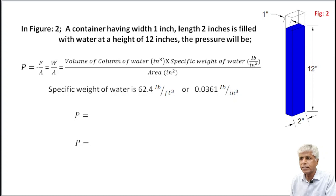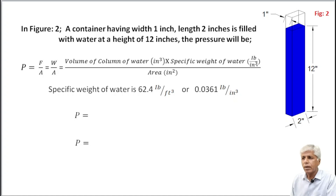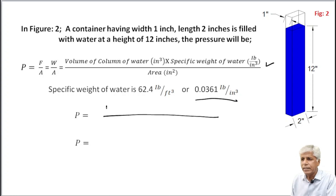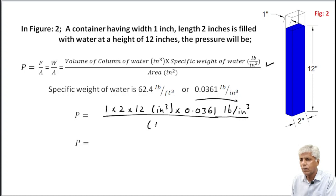In Figure 2, a container having width 1 inch and length 2 inches is filled with water at a height of 12 inches. The pressure will be calculated using the same formula. Specific weight of water is 0.0361 pounds per cubic inch. By substituting: 1 inch by 2 inch by 12 inches, times 0.0361 pounds per cubic inch, divided by the area 1 by 2 square inches. The cubic inch units cancel, and after simplifying we get 0.433 pounds per square inch.